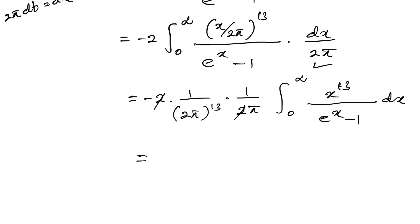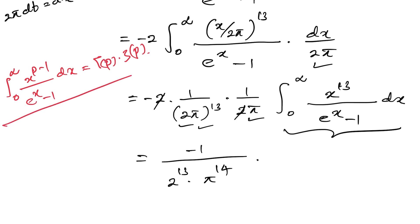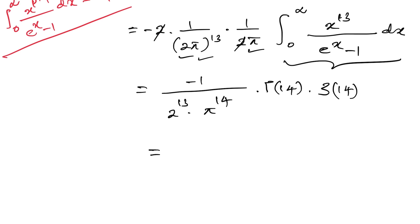After cancelling the factor of 2, we have minus 1 over [2^13 times π^14] times the integral from 0 to infinity of x^13 over [e^x - 1] dx. Recognizing that the integral from 0 to infinity of x^(p-1) over [e^x - 1] dx equals Γ(p)·ζ(p) (discussed in a previous video), with p = 14 we get Γ(14)·ζ(14).